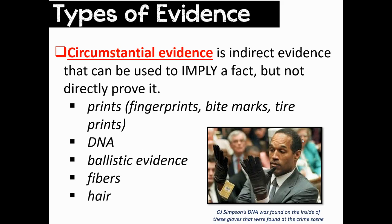Circumstantial evidence is indirect evidence that can be used to imply a fact but not directly prove it. This could be any sort of print — fingerprints, bite marks, tire impressions. DNA is also considered circumstantial evidence. Any ballistic evidence like bullets or shell casings, fibers, and hair. In the picture, you can see O.J. Simpson. O.J. Simpson's DNA was found on the inside of one of these gloves — one glove was found at the crime scene and the other was found inside his vehicle. The prosecution brought this evidence into court to try to prove the gloves belonged to O.J. Simpson, and these gloves were considered circumstantial evidence in the case.